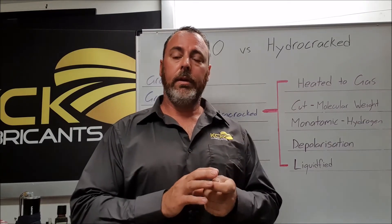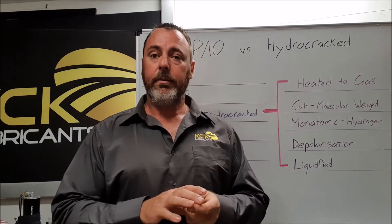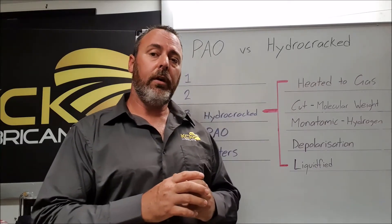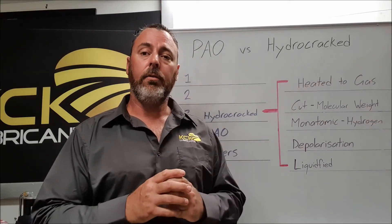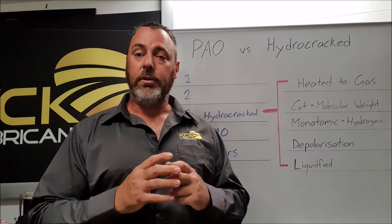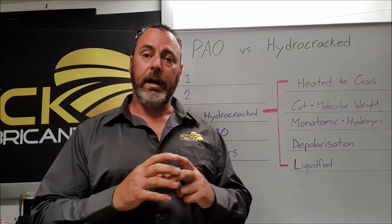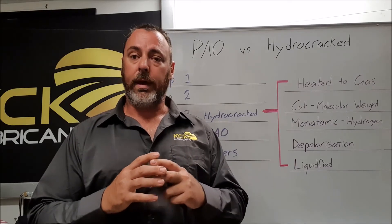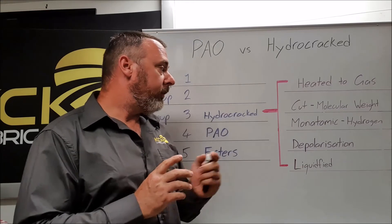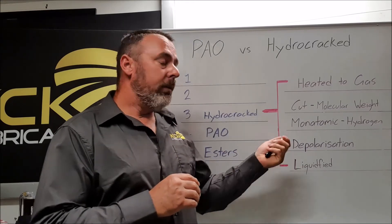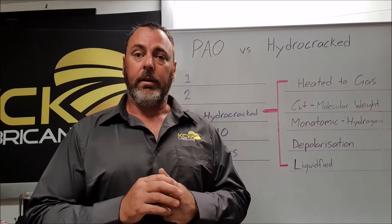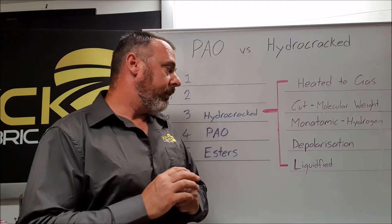Oxygen has its own polarity — it's negative. If we have any positive sites on that hydrocarbon chain at all, oxygen will latch onto it and produce sludge. It will change the structure of that hydrocarbon chain and turn it into sludge. So by depolarizing with monatomic hydrogen, we now prevent sludge and a lot of the oxidation that would have occurred otherwise.